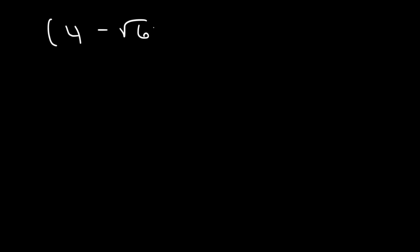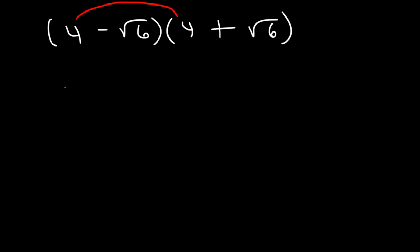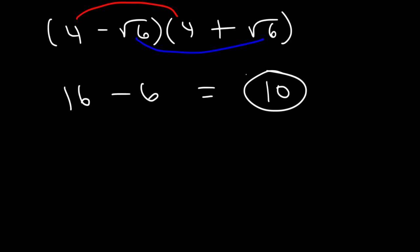Let's try another example: 4 minus root 6 times 4 plus root 6. We already know the middle terms will cancel, so we only need to multiply the outer terms. 4 times 4 is 16, and negative root 6 times root 6 is negative root 36, which is negative 6. So 16 minus 6 equals 10 — that's the final answer.